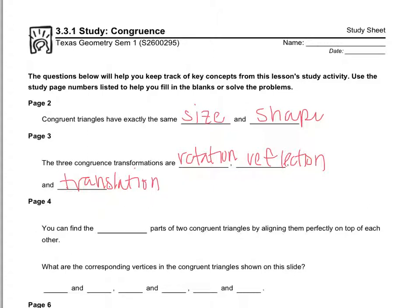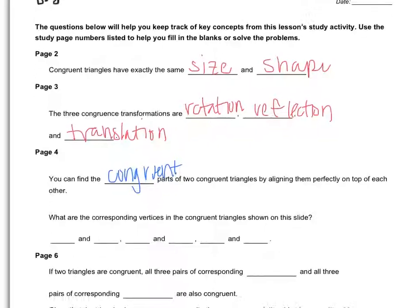If we rotate a shape, we don't change its size. If we reflect it or flip its shape, we don't change its size. If we translate or slide it, we don't change its size. And you can always find the congruent parts of two congruent triangles by aligning them perfectly on top of one another.